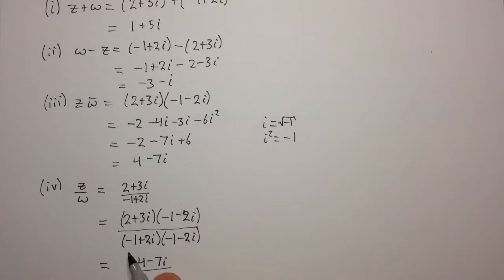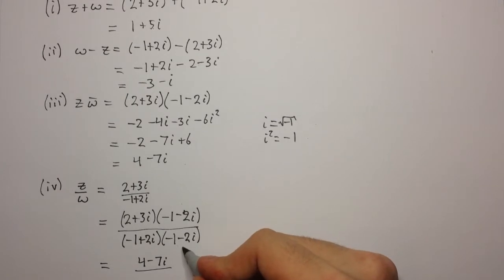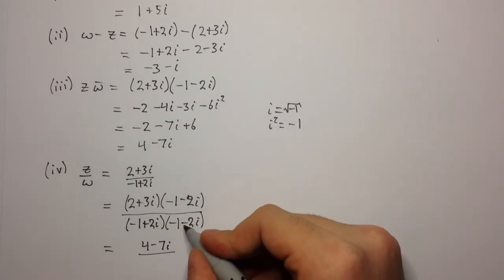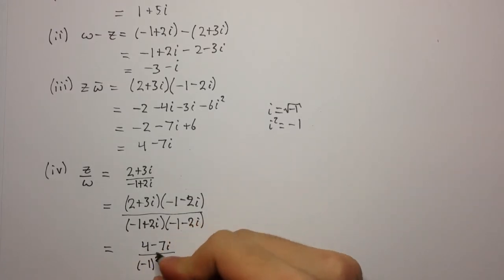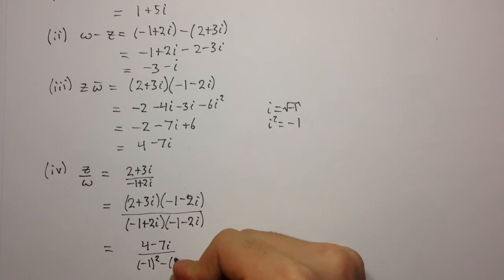On the denominator, when we multiply a complex number by its conjugate, the only difference between the complex number and its conjugate is the sign in the middle. We're going to end up with a difference of two squares. Here we have minus 1 squared minus 2i squared.